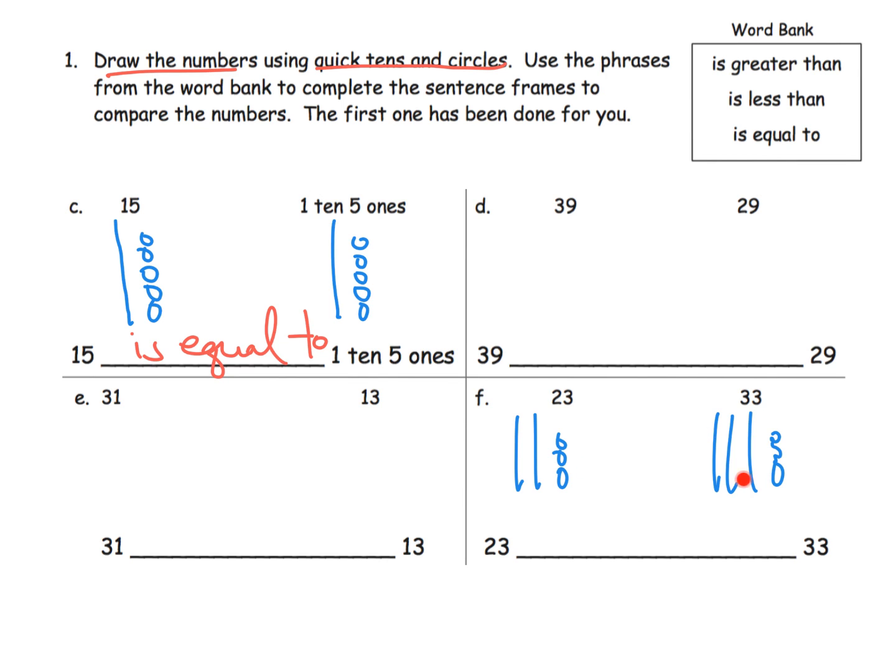But now we can see that this only has two tens while this has three tens, so automatically 33 is greater than 23. But we need to write it in a sentence form down here with this sentence frame, so we're going to put 23 is less than 33.